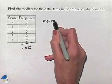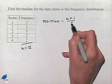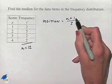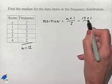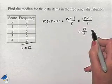So that's going to equal 12 plus 1 divided by 2. That's 13 over 2, which is equal to 6.5.